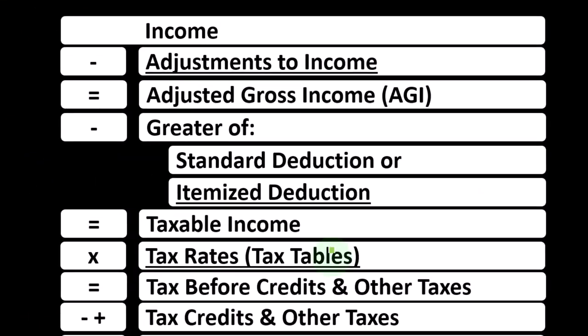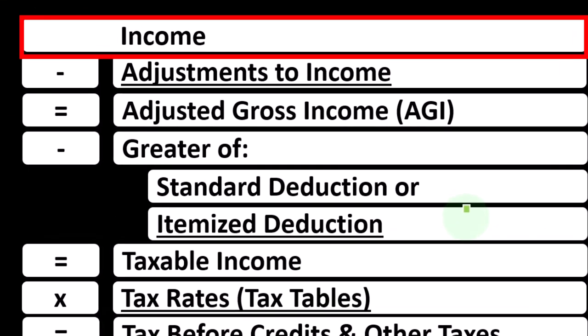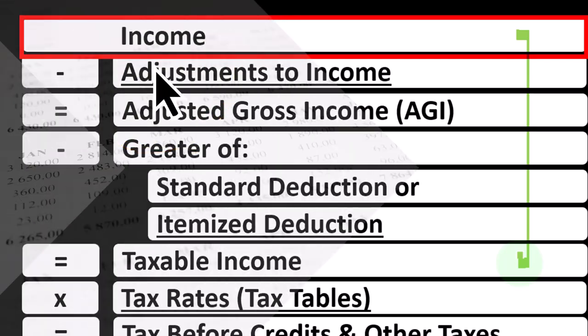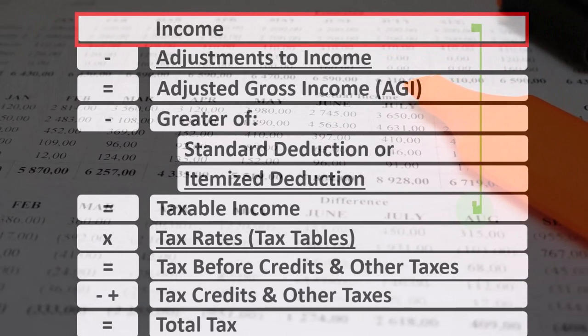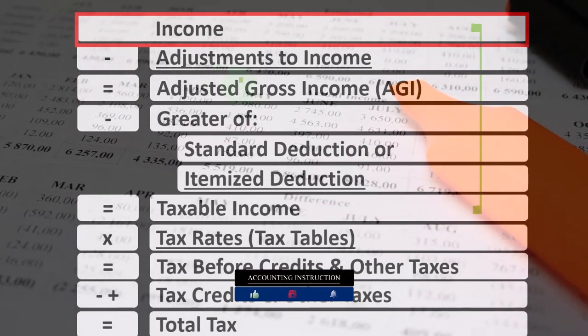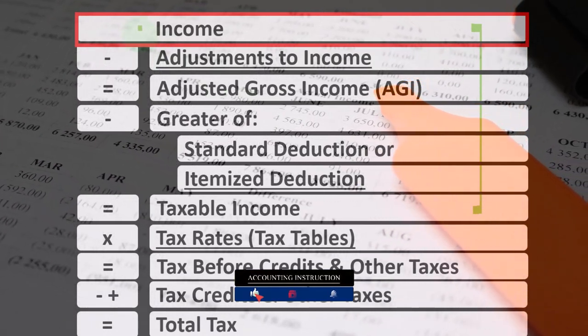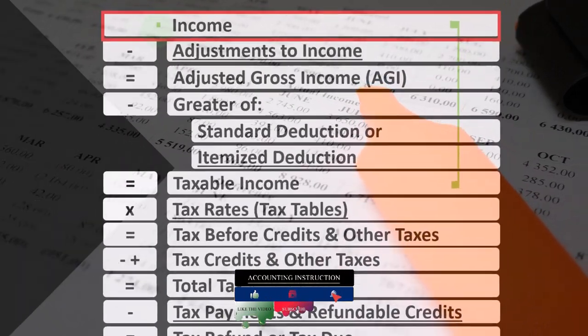Looking at the income tax formula, we're focused on line one income. Remember, the first half of the income tax formula is, in essence, an income statement—however, it's just an outline. Other forms and schedules flow into these line items, like the Schedule E, which is, in essence, an income statement in and of itself, having rental income minus rental expenses. The net rental income rolls into line one income of our income tax formula.